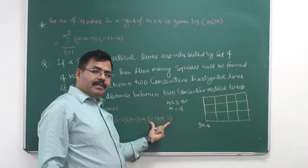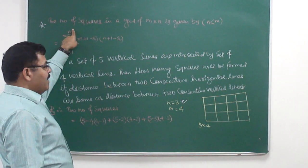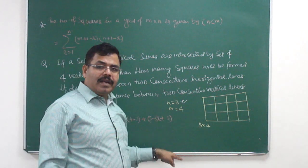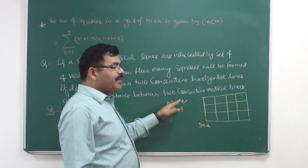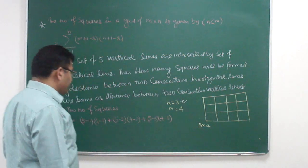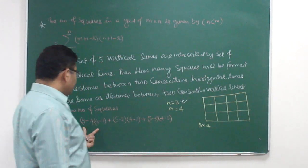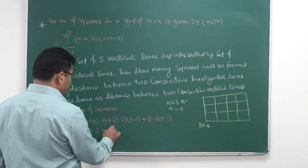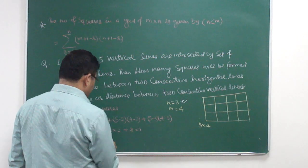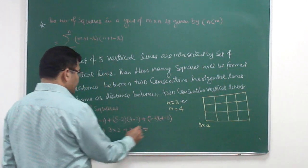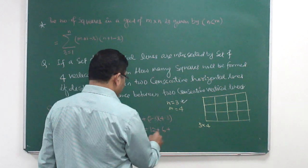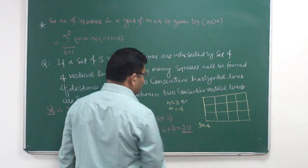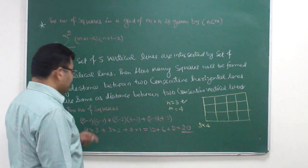The value of r varies from 1 to n. Since n = 3, r takes values 1, 2, and 3. For r = 1: 4 × 3 = 12. For r = 2: 3 × 2 = 6. For r = 3: 2 × 1 = 2. So total squares = 12 + 6 + 2 = 20 squares.